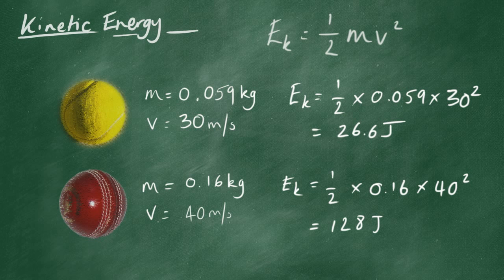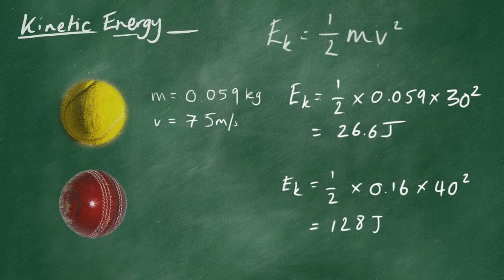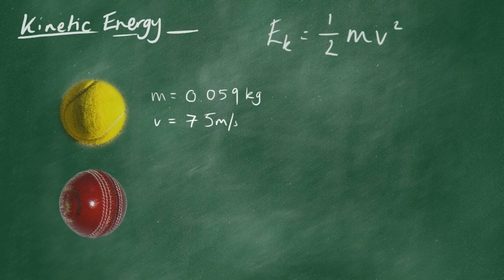Let's consider another situation, though, because actually the forehand is not the fastest shot in tennis. The fastest shot is going to be off a serve. And serves in tennis can be anything up to about 150 miles an hour. Pretty fast. So, let's calculate the kinetic energy for the tennis serve. Remember, the cricket ball was 128 joules off the bowler.